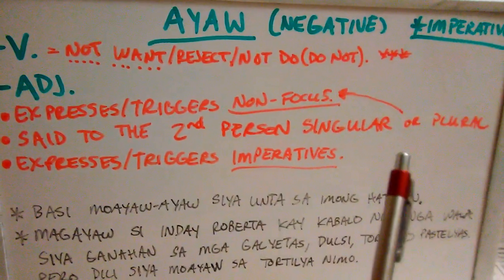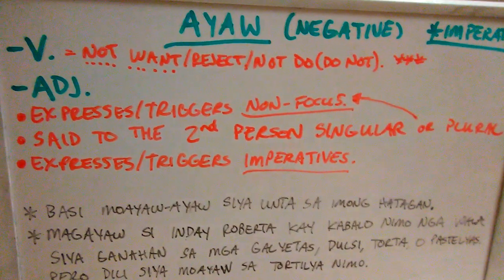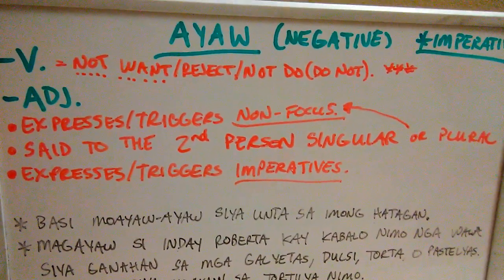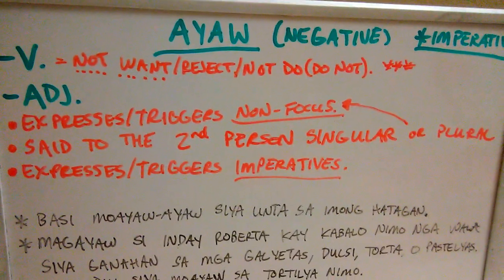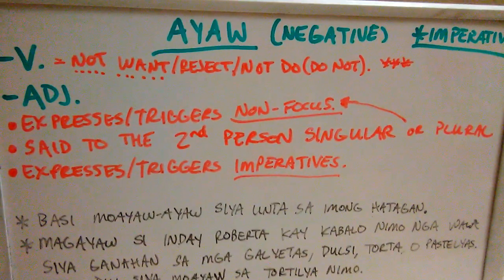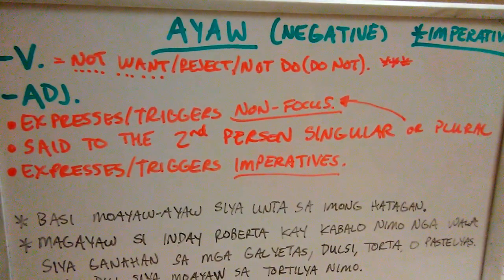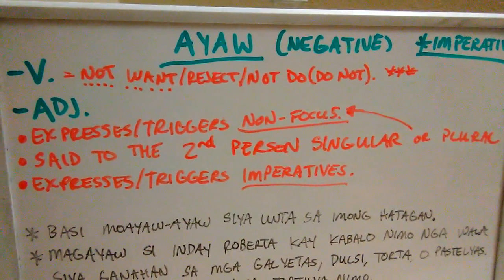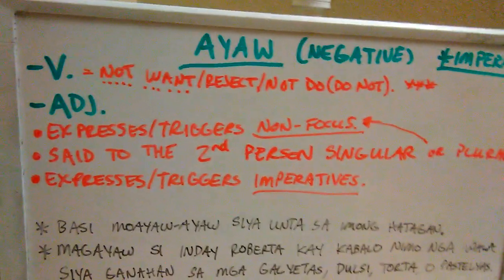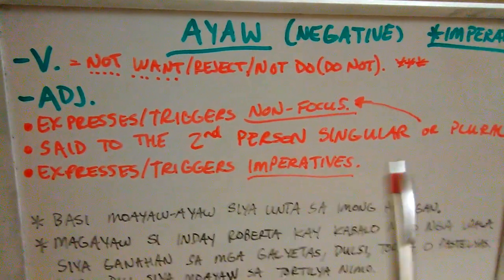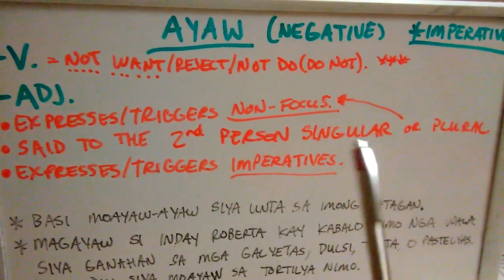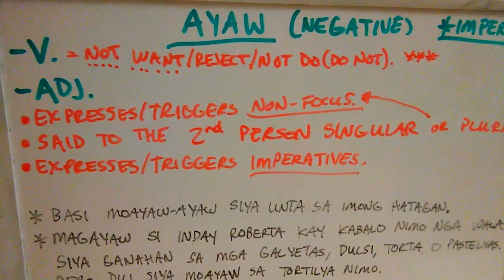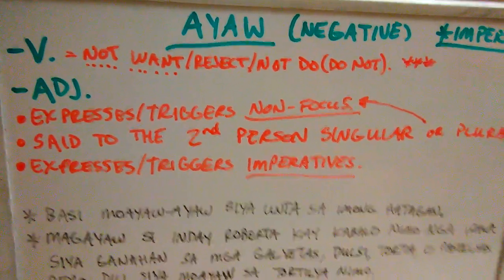Ayaw is directed to the second person singular or second person plural. That makes sense because if you're using it as an imperative, you're commanding somebody — are you commanding somebody to not do something, a group of people, or yourself included with others? That's why it's important to discern who you're saying this to. The second person singular and plural have to be in the non-focus, meaning you use their ergative forms, and we'll go through that in a future video.